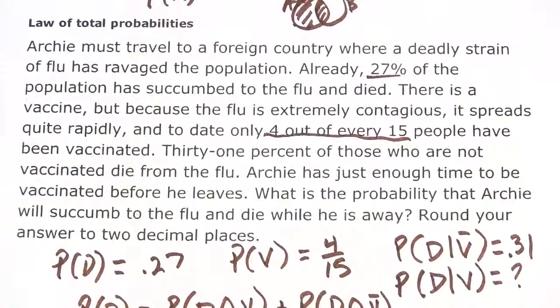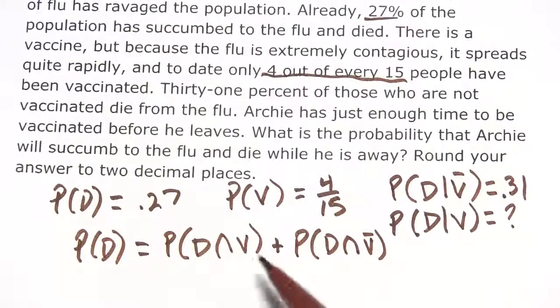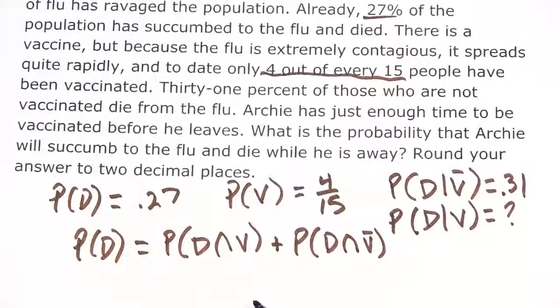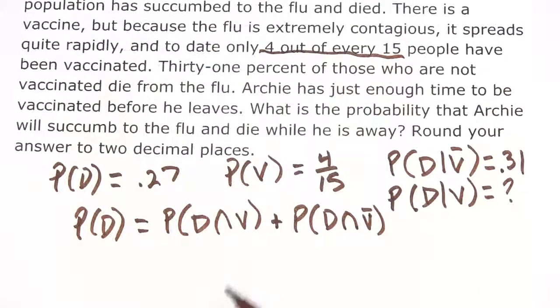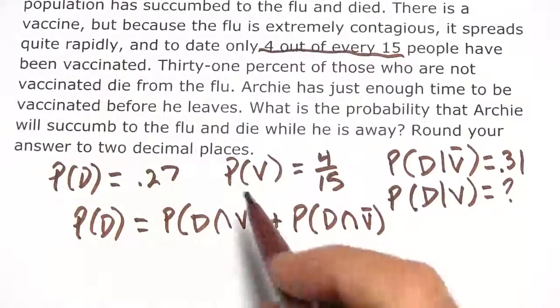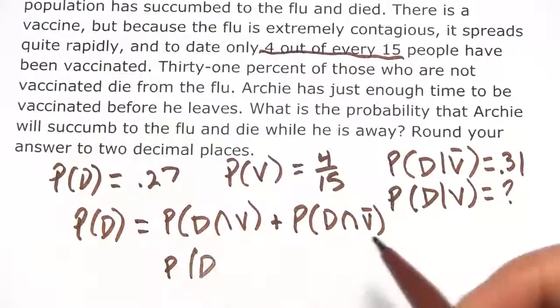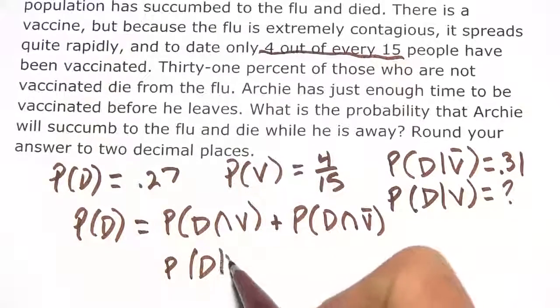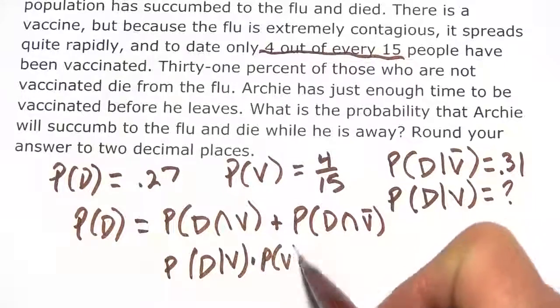There's the law of total probabilities. It doesn't look like we can do much with that yet, but from our work with tree diagrams and conditional probabilities, we know we can write the intersection in a different way. This can become the probability of dying given you've been vaccinated times the probability of having been vaccinated.